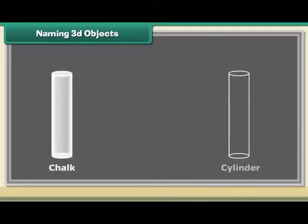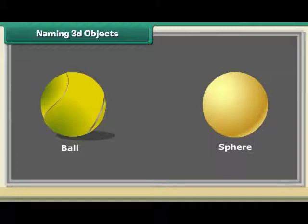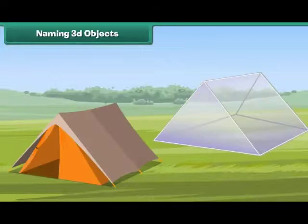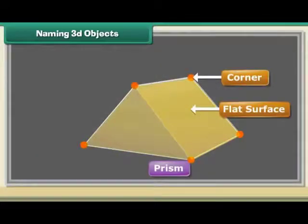A chalk is a cylinder. It has a round surface and two flat surfaces. A ball is a sphere. It has a round surface. A tent is a prism. It has corners and flat surfaces.